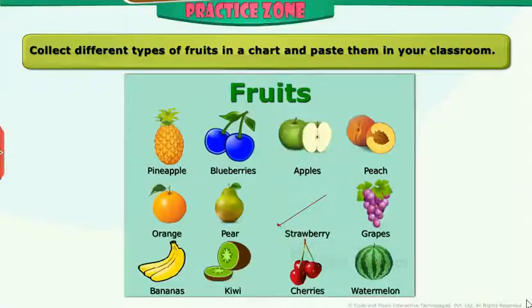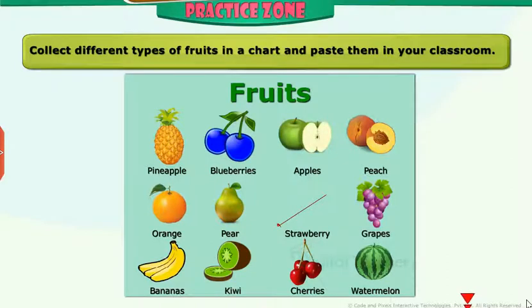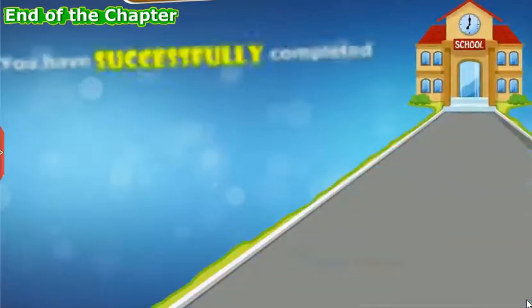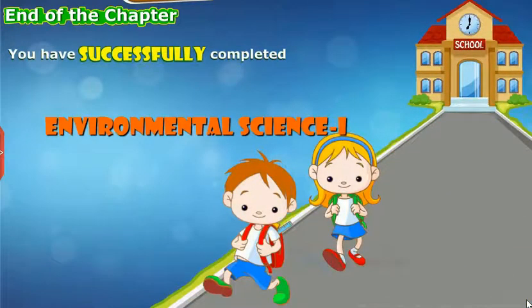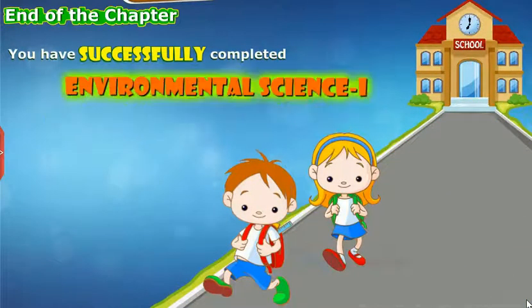Take up the following activity: Collect different types of fruits in a chart and paste them in your classroom. You have successfully completed Environmental Science Level 1.